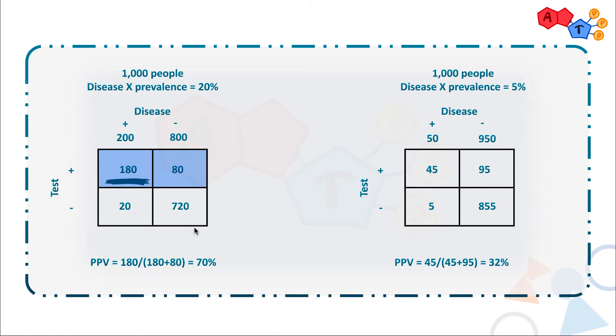So that 70% means: if one of those people got a positive result and asks you, 'What is the chance that I actually have the disease?' — you tell him 70%. That's what the positive means.